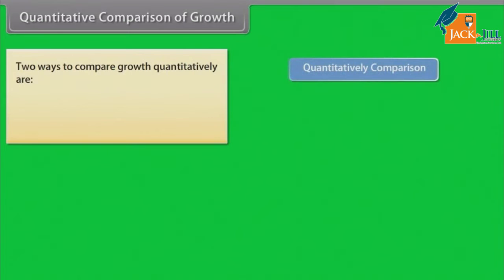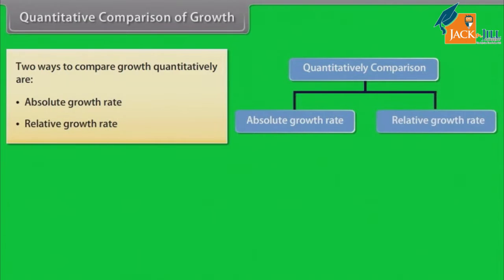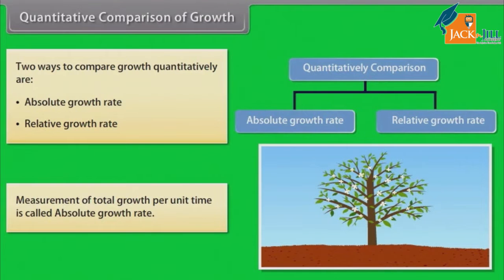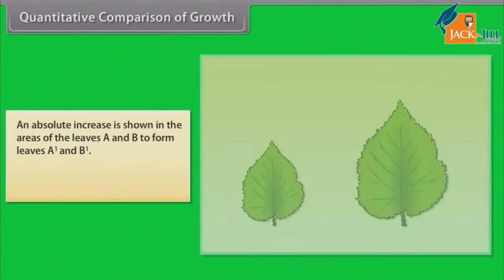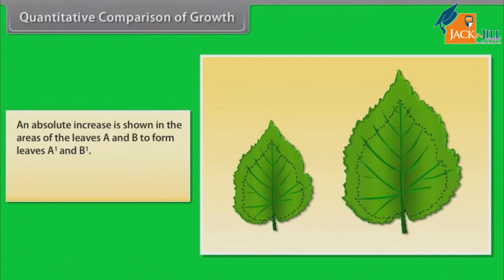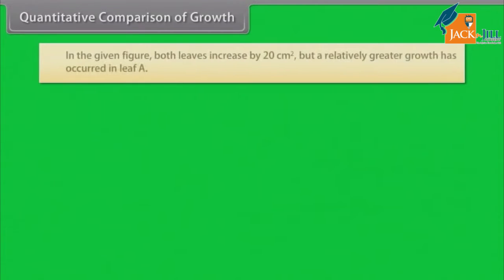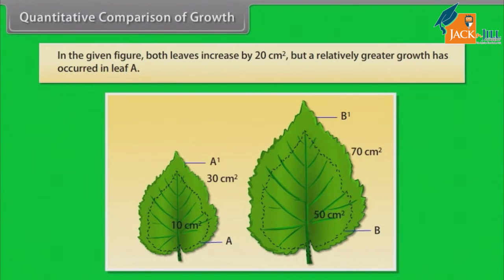Quantitative comparison of growth: Two ways to compare growth quantitatively are absolute growth rate and relative growth rate. Measurement of total growth per unit time is called absolute growth rate. An absolute increase is shown in the areas of leaves A and B to form leaves A1 and B1. Growth of a given system per unit time is called relative growth rate. In the given figure, both leaves increase by 20 cm² but a relatively greater growth has occurred in leaf A.